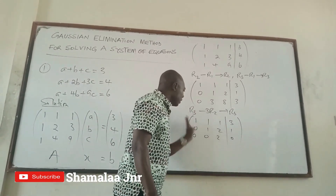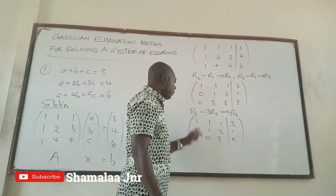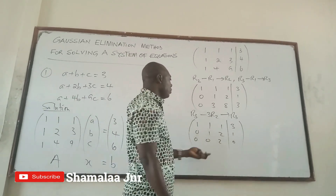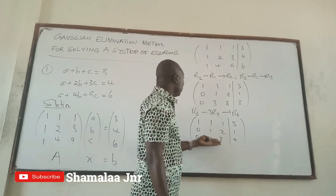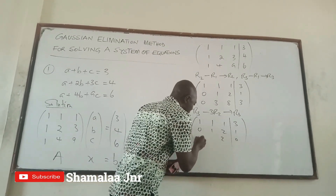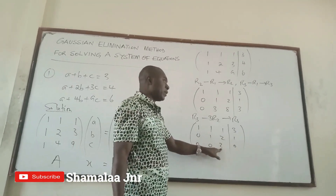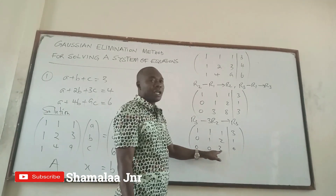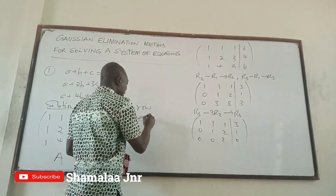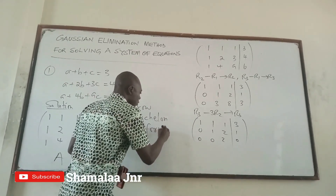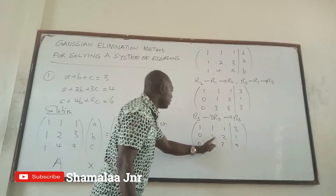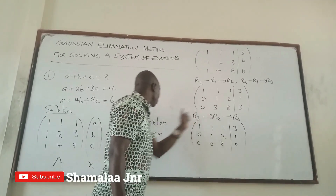You have been able to transform the left-hand side into an upper triangular matrix. These entries are zeros and the diagonal entries are non-zero. At this point you could use back substitution, but it is advisable to reduce this further — making the diagonal entry 1 — so that the left-hand side is in row echelon form.